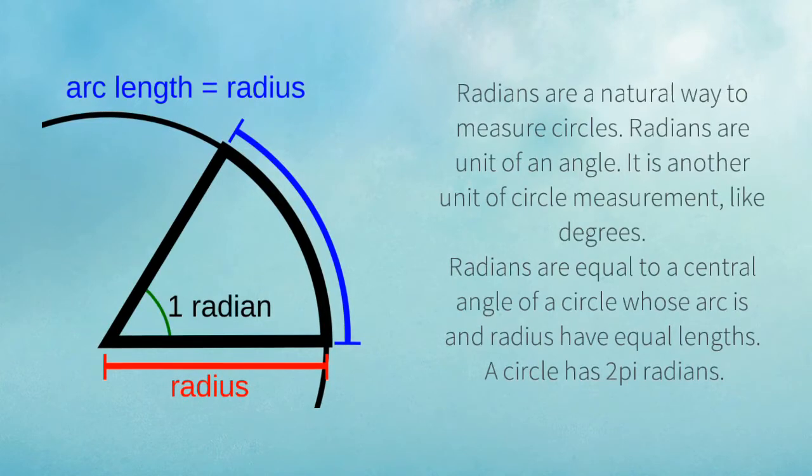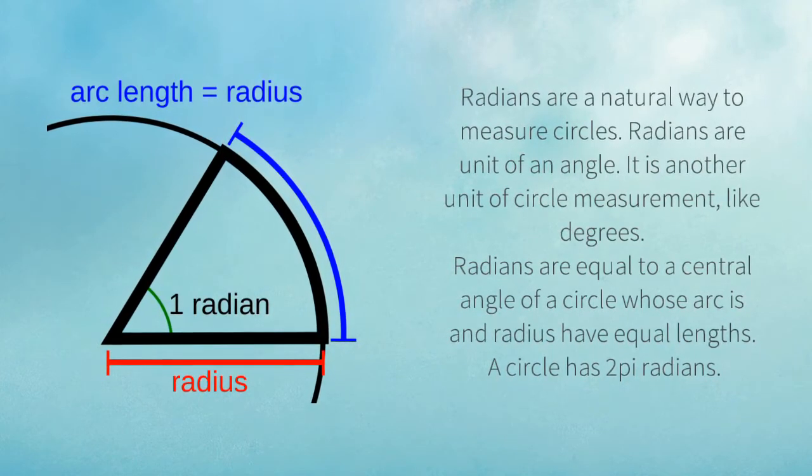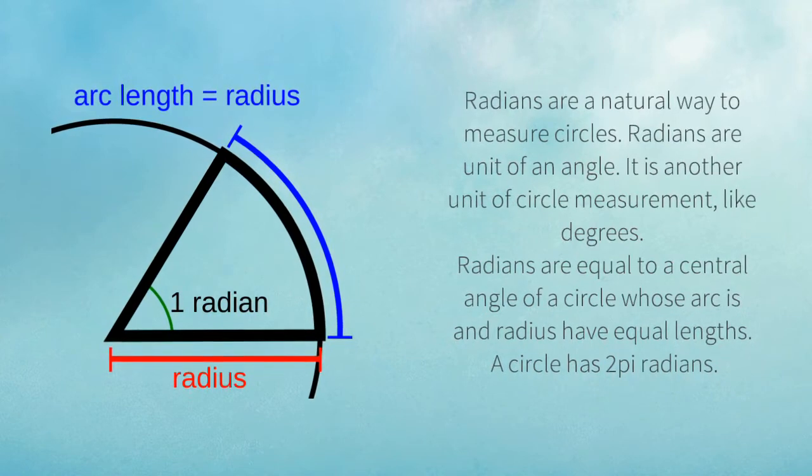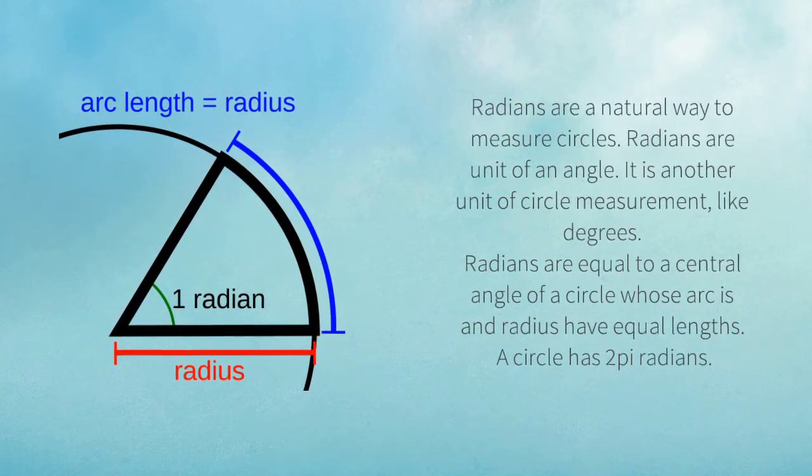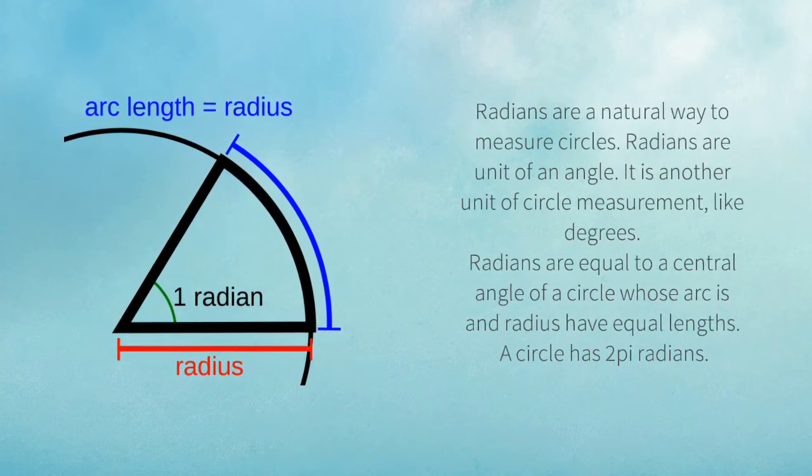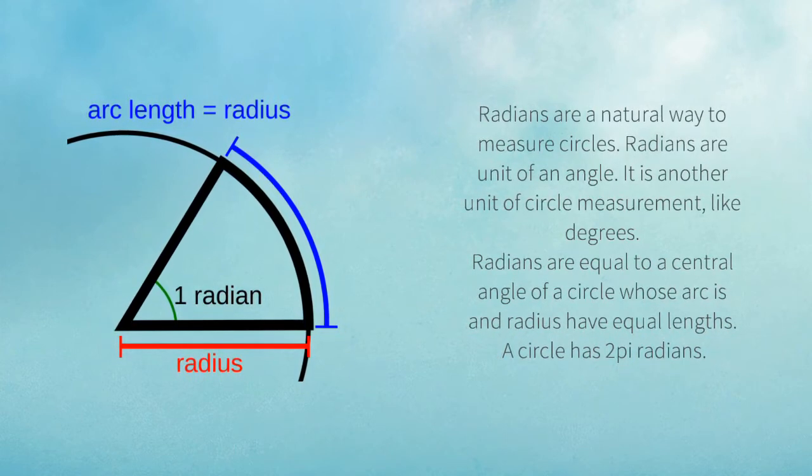As you can see in a typical unit circle, both degrees and radians are given. Radians are just a natural way to measure circles. It's just another unit of circle measurement, just like degrees. You know that a circle has 360 degrees. Likewise, a circle actually also has 2 pi radians.